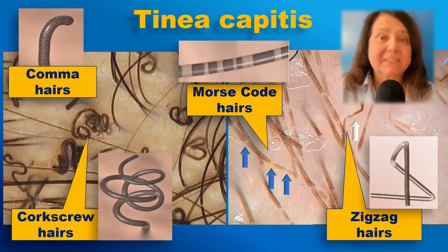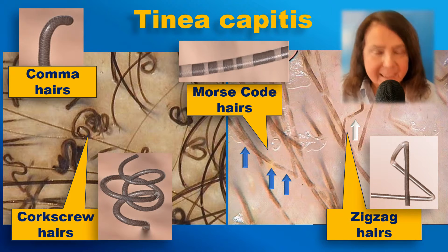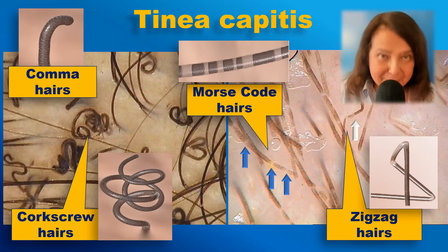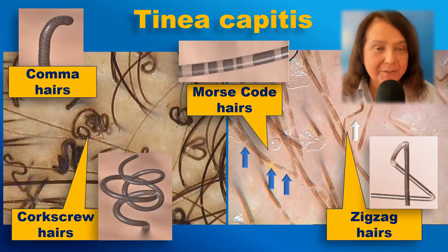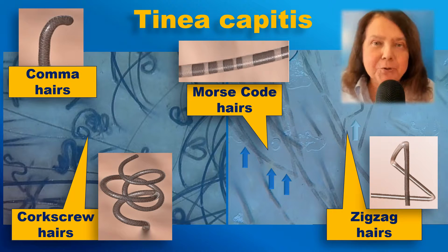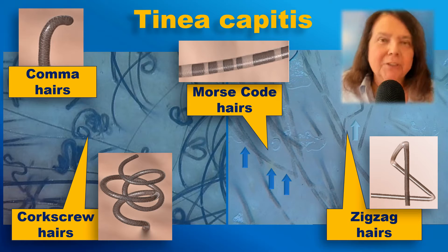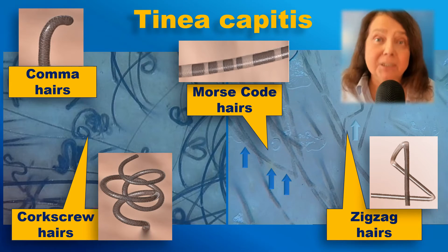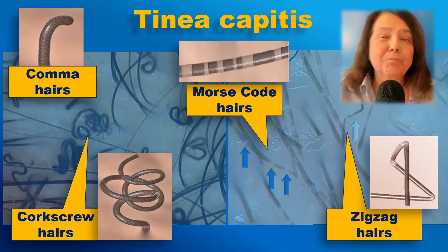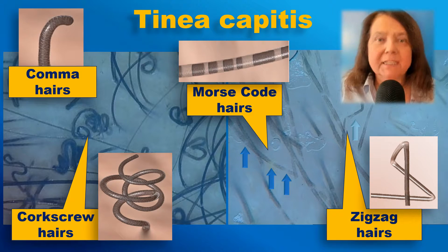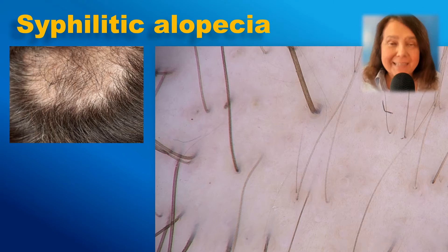However, Morse code hairs and zigzag hairs are not specific for tinea capitis — we may see them also in some other diseases. So in this image you see the four most typical trichoscopy features of tinea capitis: the coma hairs, the corkscrew hairs, the Morse code hairs (also sometimes called interrupted hairs), and the zigzag hairs.